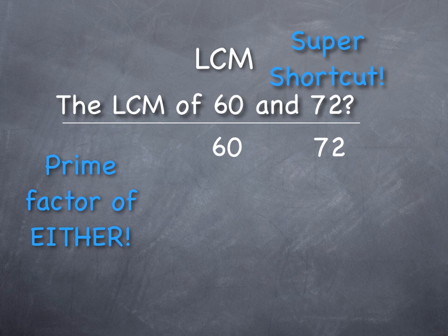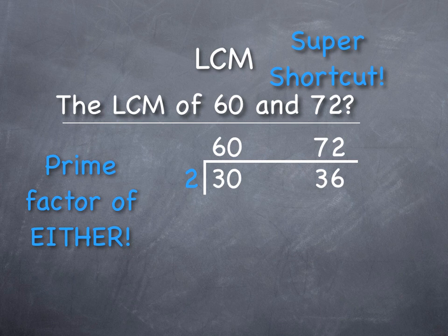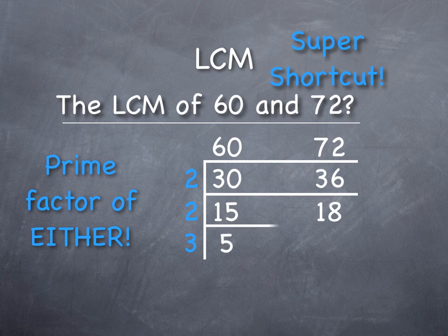So I first start out with two. Before, we only used two if they both had two as a prime factor. Now only one has two, so I write two. Two into 30 — two into 60 is 30, and 72 is 36 — and again two goes into both of them, and two would go into one of them.